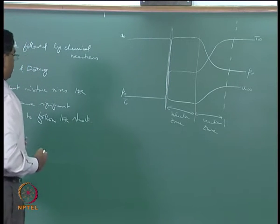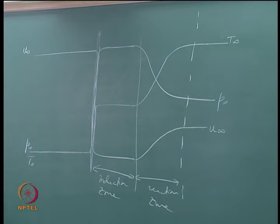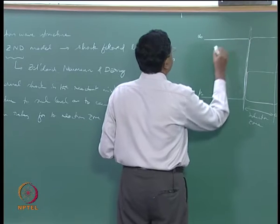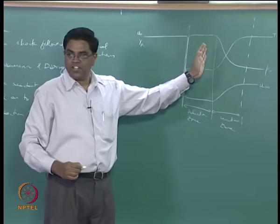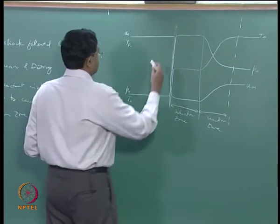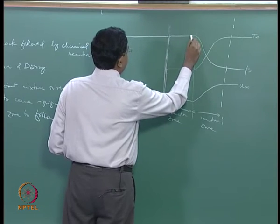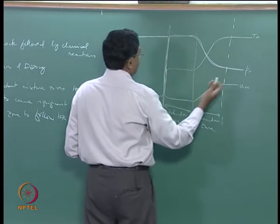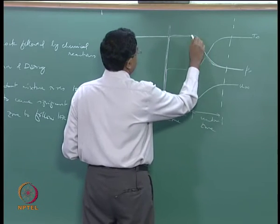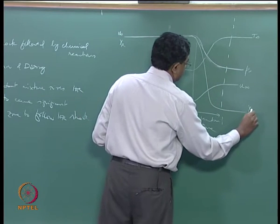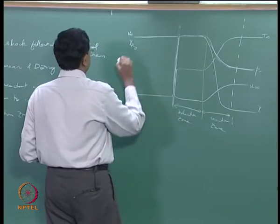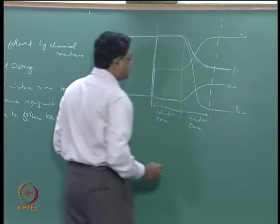Considering reactant concentration: you start with a high reactant level Y_r, and there is no change across the shock. The reactant concentrations remain essentially the same through the induction zone and begin to decay only in the reaction zone, with the deficient reactant going from Y_r0 all the way down to near zero at Y_r∞.